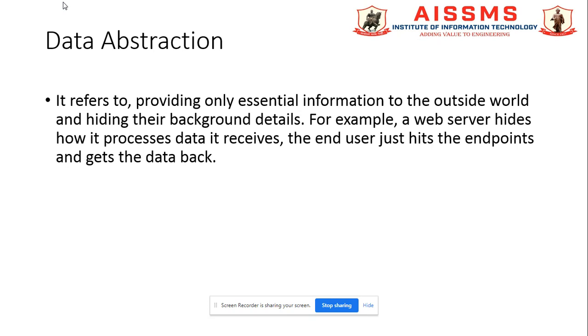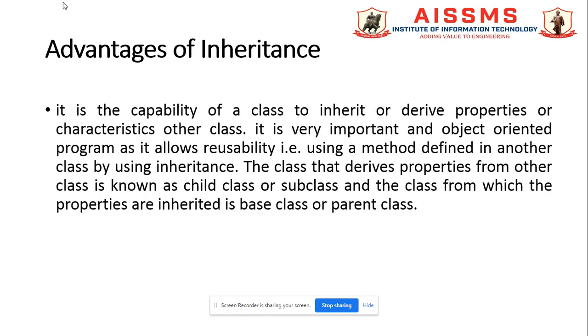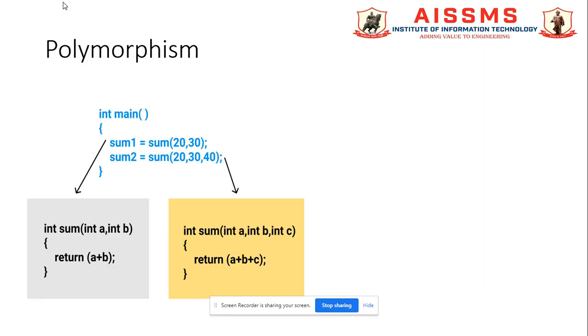We will discuss the data abstraction, data encapsulation, various types of inheritance like single, multiple, multi-level, hierarchical, hybrid inheritance with their examples and advantages. Last but not least, the polymorphism.